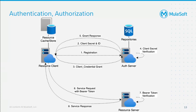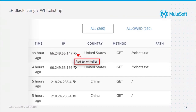This is all about authentication and authorization. It might look a bit complex but it's very easy to implement with the help of an API Gateway. Moving ahead, the third policy is IP blacklisting and whitelisting.